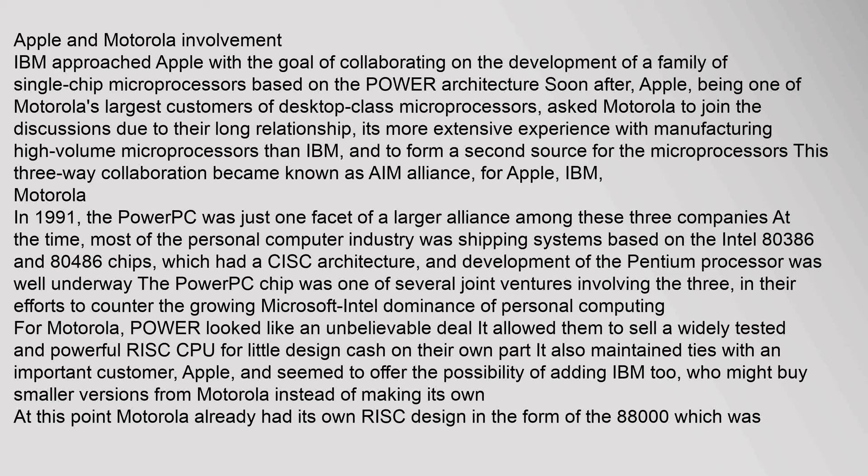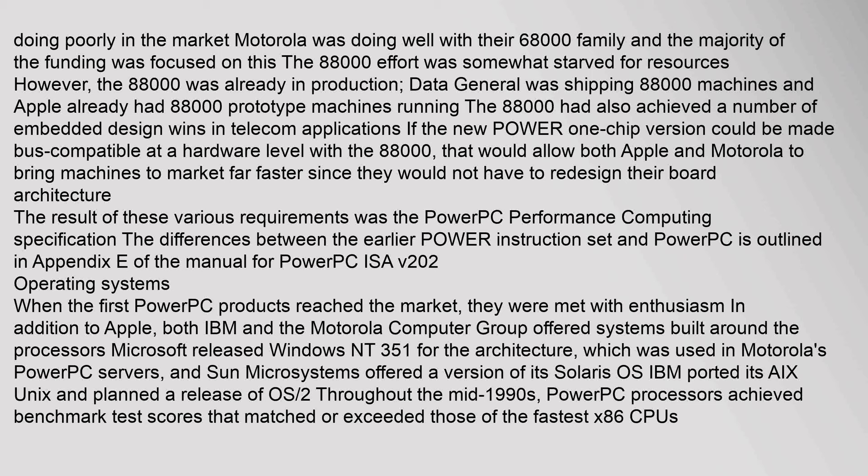For Motorola, Power looked like an unbelievable deal: it allowed them to sell a widely tested and powerful RISC CPU for little design cost. It also maintained ties with Apple, and seemed to offer the possibility of adding IBM as a customer who might buy smaller versions from Motorola. At this point, Motorola already had its own RISC design in the form of the 88000, which was doing poorly in the market. Motorola was doing well with their 68000 family, and the majority of funding was focused on this. The 88000 effort was somewhat starved for resources.